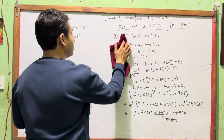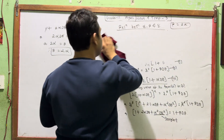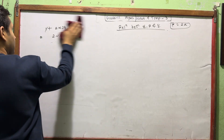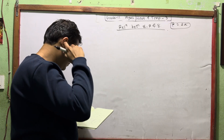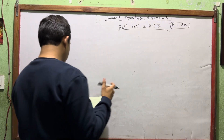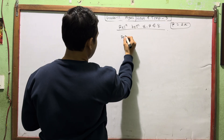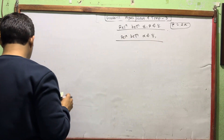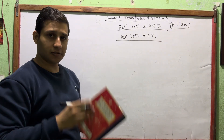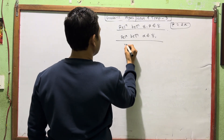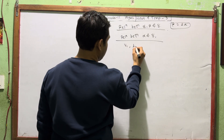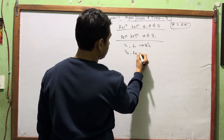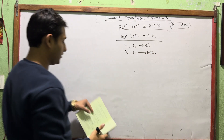Now I will give you the relationship between alpha and gamma. For volume expansion, V1 is the volume at theta 1 degrees Celsius, and V2 is the volume at theta 2 degrees Celsius.